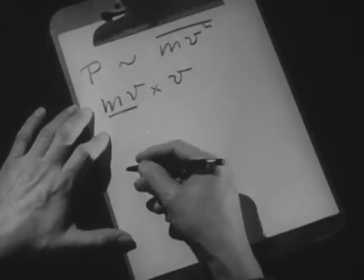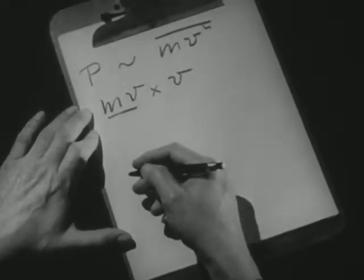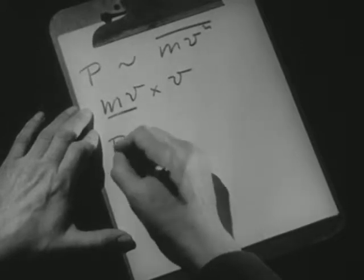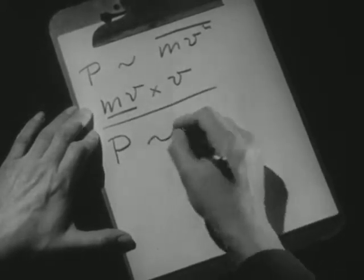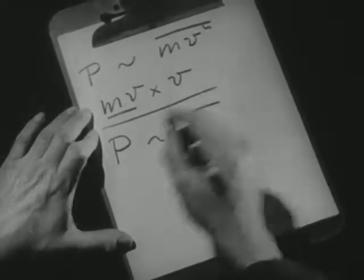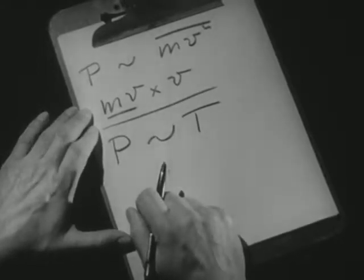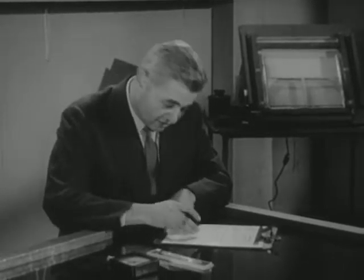Now, experiments say that the pressure in a gas is proportional to the absolute temperature. This is a little more complicated than I make out here, simply because we use this relation to define absolute temperature. In order to clarify this notion, let's go do some experiments over here.